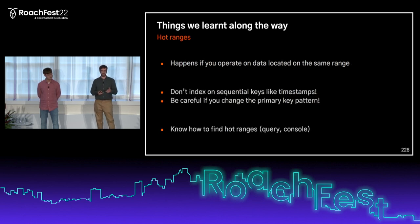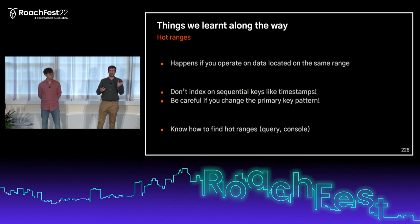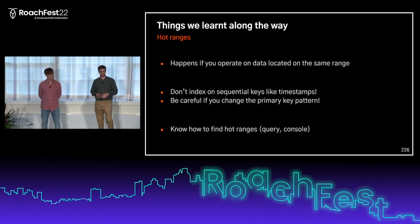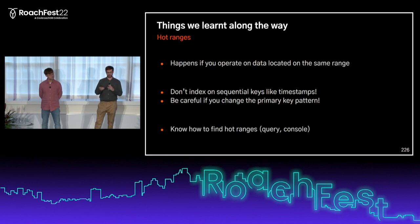Hot ranges are very easy to trigger, so be really careful with your primary keys — especially if they are sequential. As mentioned, we had an incident where we had perfectly randomized primary keys, but then during one release we added a prefix to them, so they all went to the same range. That caused the third incident. Make sure you know how to detect hot ranges — there are queries you can run to find them. In the latest version the console also shows you hot ranges. Know how to do that before you go to production.